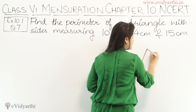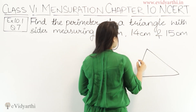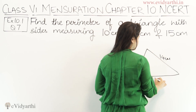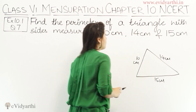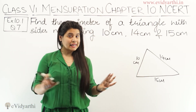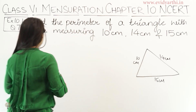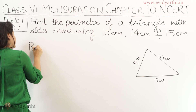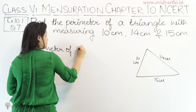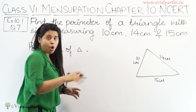So how many sides can a triangle have? If this is the triangle, it can have sides of 10 cm, 14 cm and 15 cm, and you have to find the perimeter. Now we can see that the sides are not equal — it is not an equilateral triangle. The perimeter of the triangle will be the sum of all these sides.